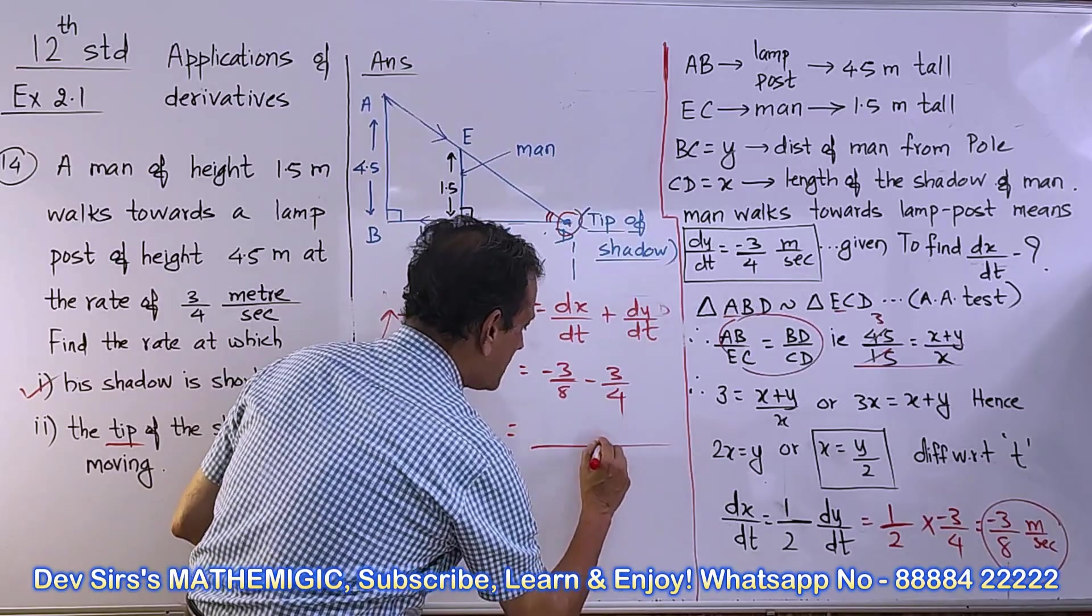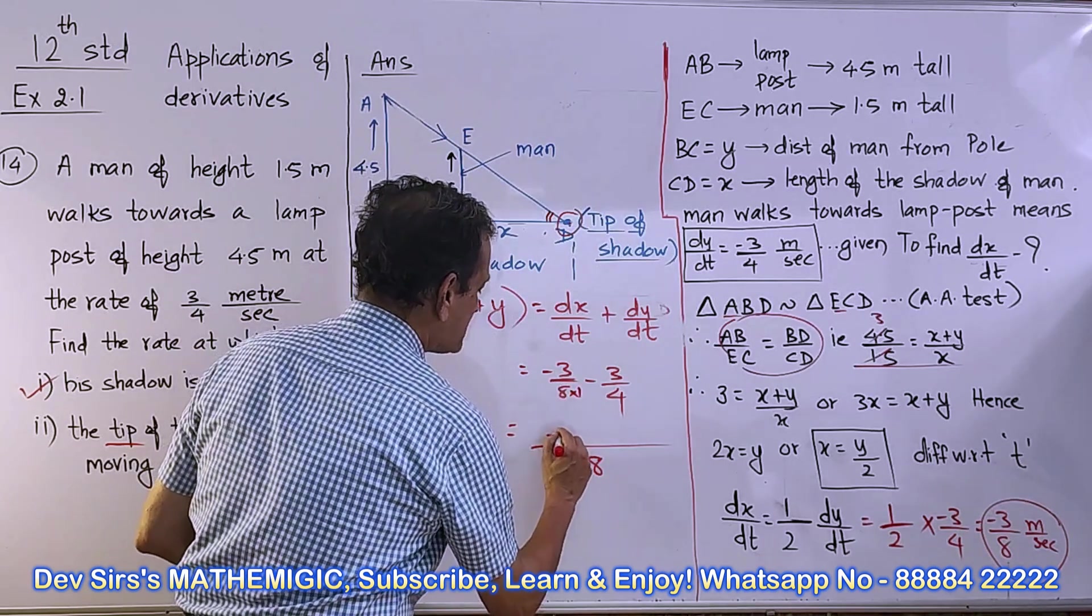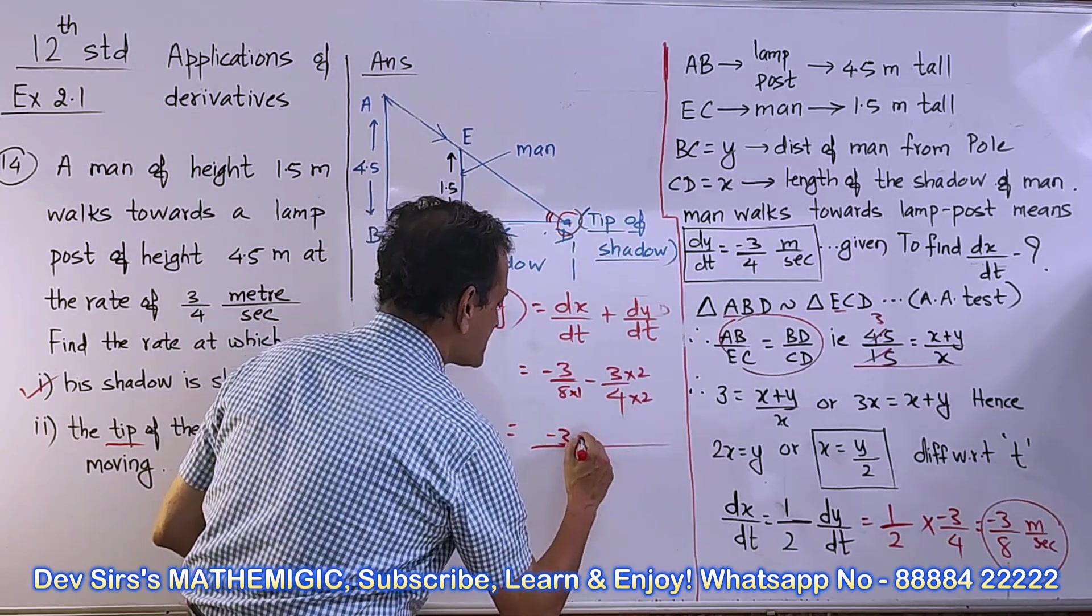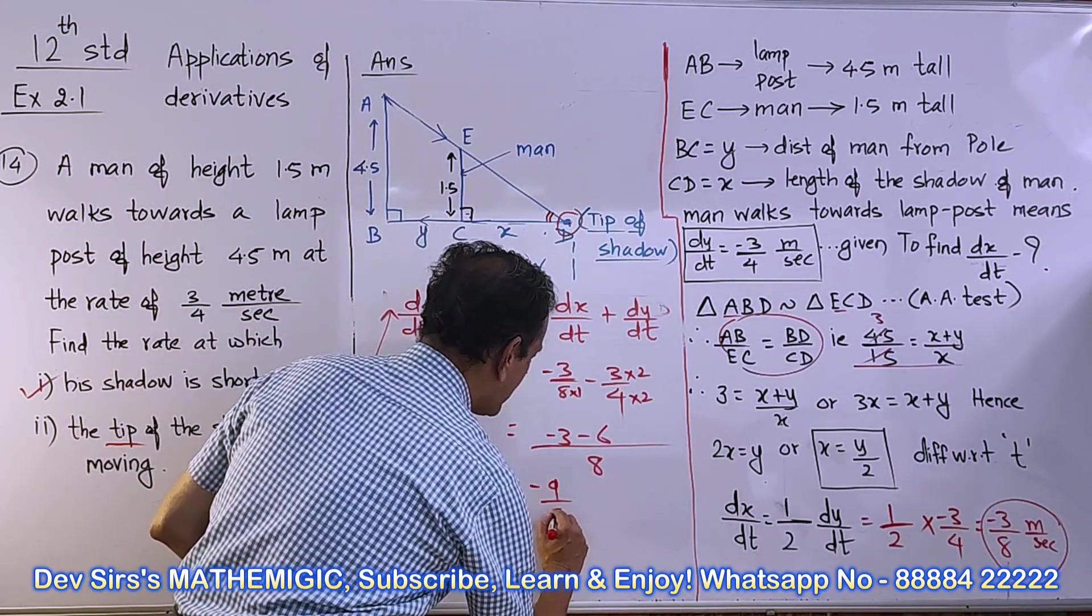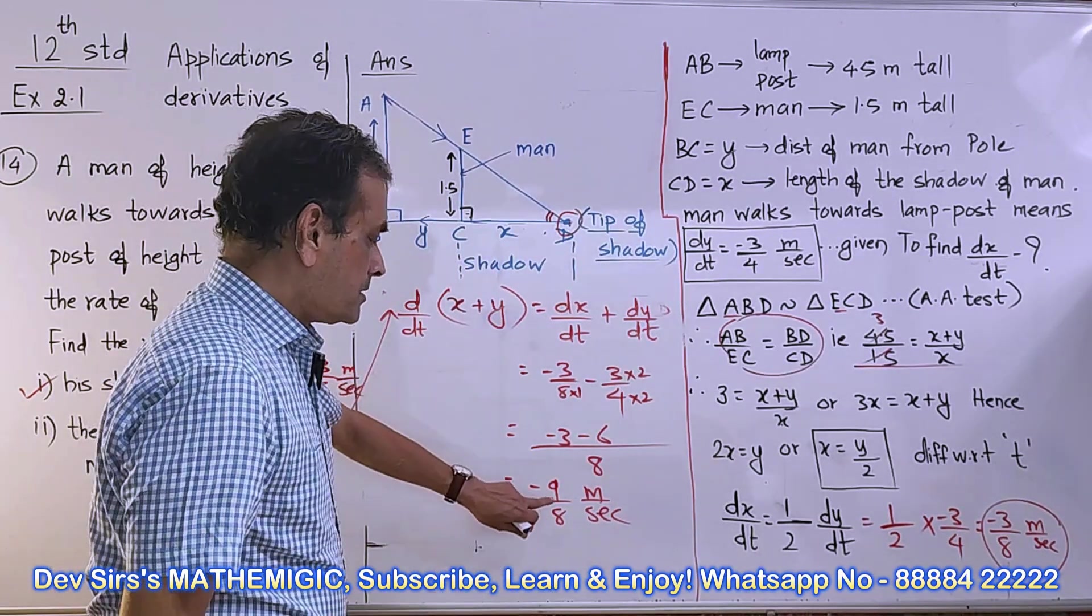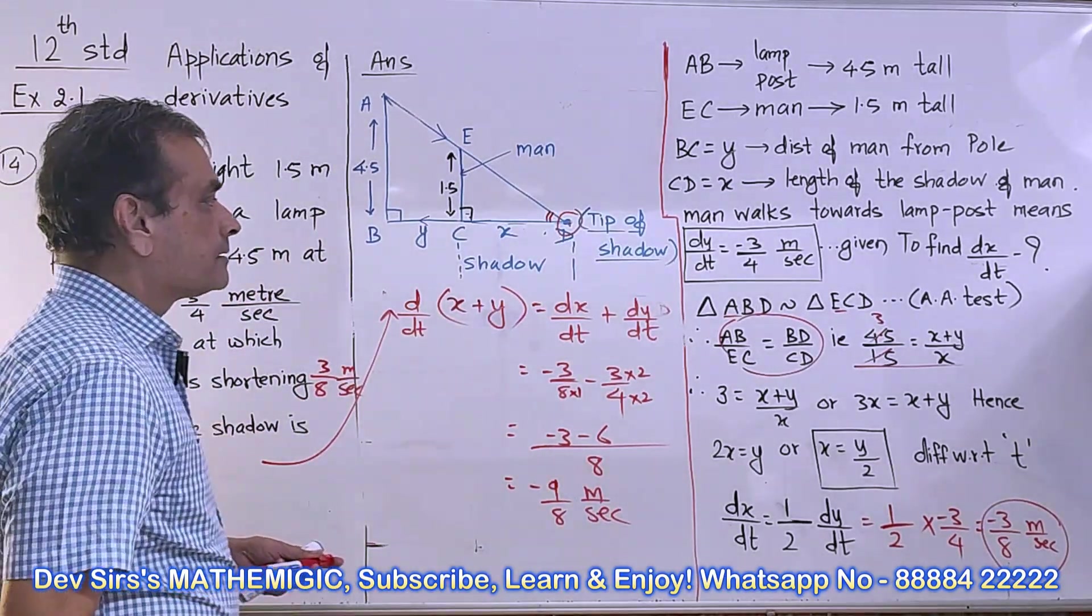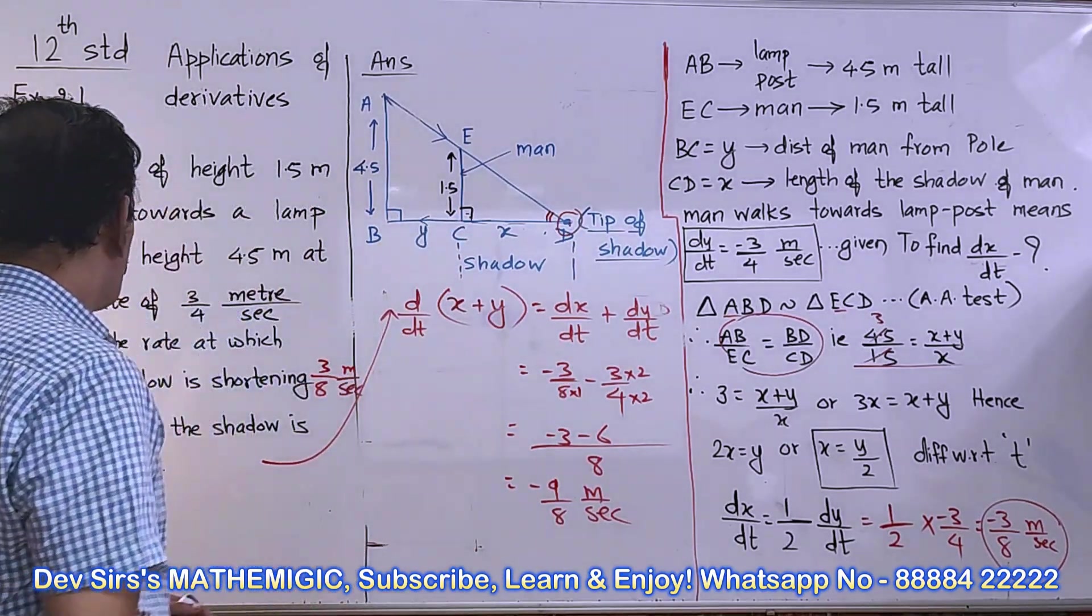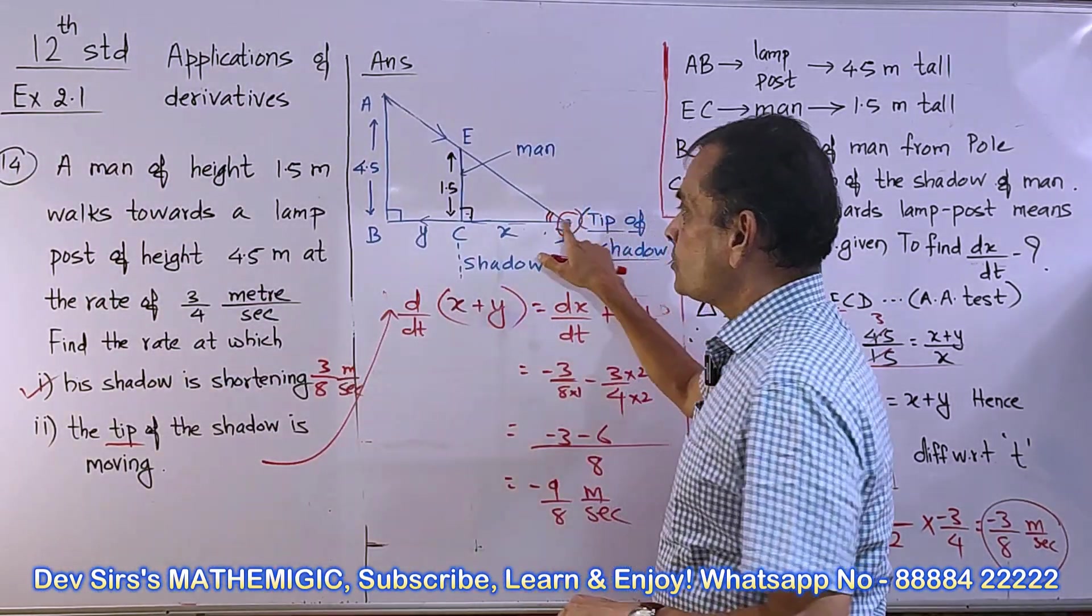LCM is 8, which is a factor of 8. So minus 3 minus 6 gives you minus 9/8 meters per second. Minus 9/8 meters per second represents the speed of the tip of the shadow. Find the rate at which the tip of the shadow is moving - that's the rate, the speed.